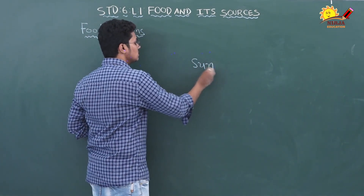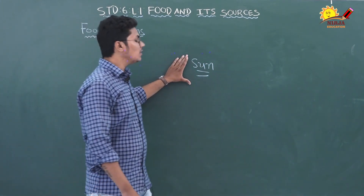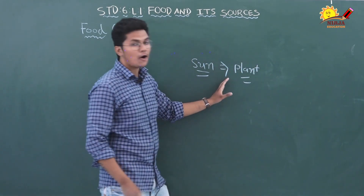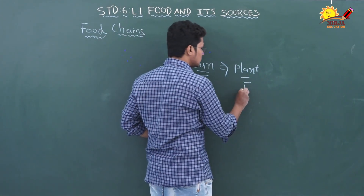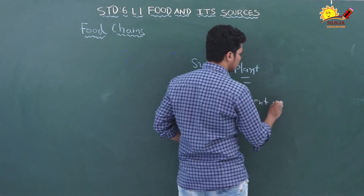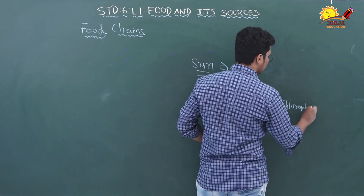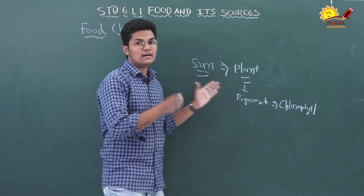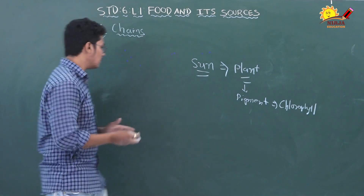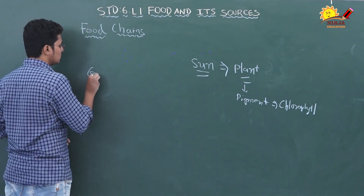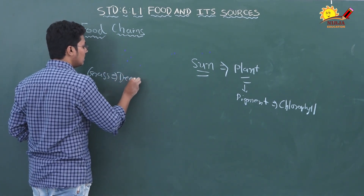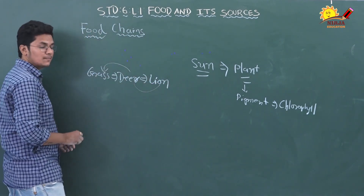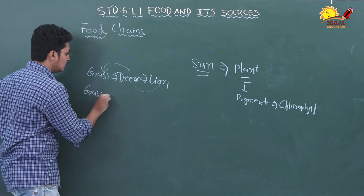Now, the ultimate source of energy is the sun. Animals cannot utilize the energy radiated by the sun, but only plants can, because plants have a pigment known as chlorophyll. Plants use chlorophyll to make food for themselves, and other animals depend on plants and other animals for their nourishment. For example, grass is eaten by deer and deer is eaten by lion.